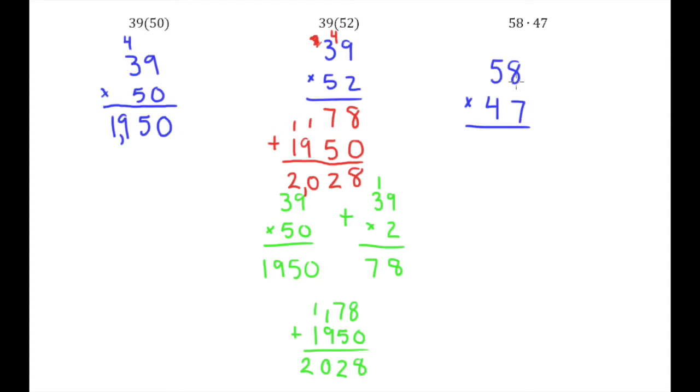So 7 times 8 is 56. So I'm multiplying the ones place at the bottom with all the digits on top. 7 times 5 is 35, plus 5 is 40.